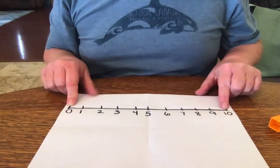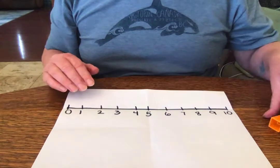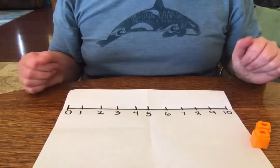There's our number line, 0 to 10. I have some objects here that we can use.